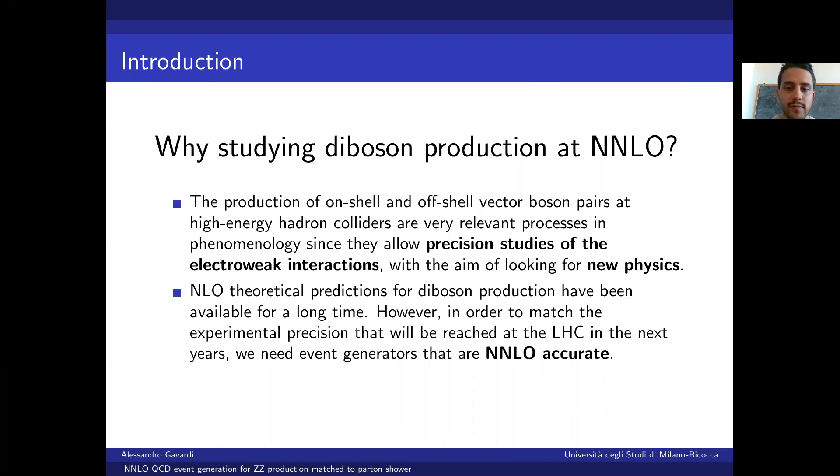The answer to the first question is we should indeed study Z-boson production because it is an interesting process from the phenomenological point of view since it allows for precision studies of the electroweak interactions with the aim of looking for possible new physics. We need also to push our calculations to NNLO accuracy because we need to keep the theoretical uncertainties smaller than the statistical errors provided by experiments.